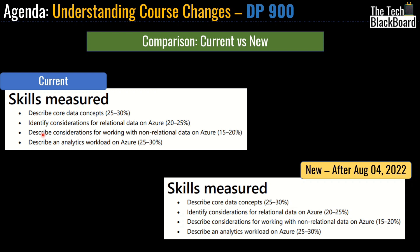Moving on, we have 'describe considerations for working with non-relational data on Azure' which is currently 15 to 20 percent — exactly the same in the new setup. And the last one, 'describe an analytics workload on Azure,' currently 25 to 30 percent — exactly the same in the new setup as well. Now looking at this, you might be thinking both look exactly the same, so what exactly is changing? It took me a while to figure this out, so let's jump to the next slide and understand exactly what is changing.